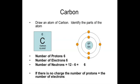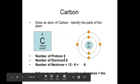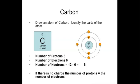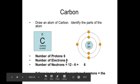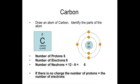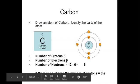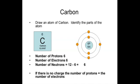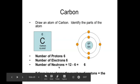No two different elements share the same atomic number, so only carbon has an atomic number of six. That atomic number of six represents the number of protons. Because carbon is neutral, the number of protons has to be equal to the number of electrons, so the positive protons and the negative electrons must have equal value.